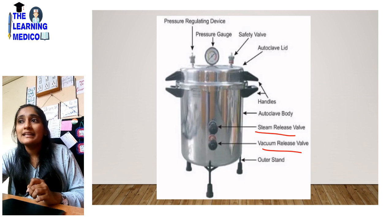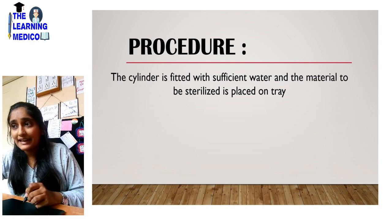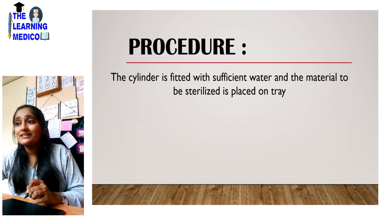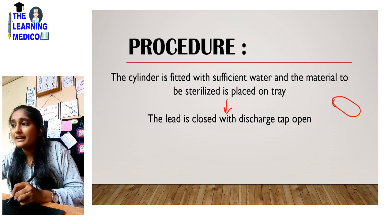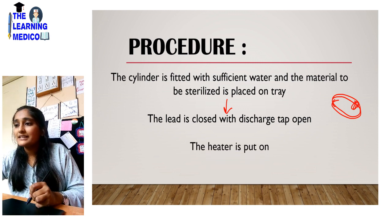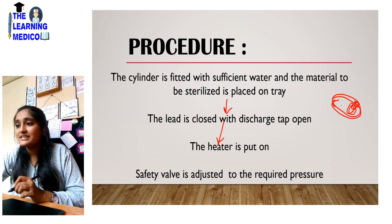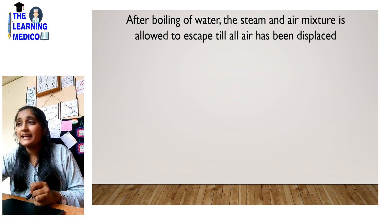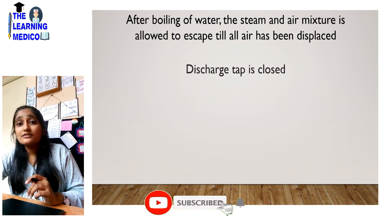Go to your college lab and see it — when you see it, you will understand better. For the procedure: the cylinder is filled with sufficient water and the material to be sterilized is placed on a tray. The lid is closed with the discharge tap open. The heater is turned on and the safety valve is adjusted to the required temperature. After boiling of water, the mixture of steam and air is allowed to escape until all the air has been displaced, and then the discharge tap is closed.